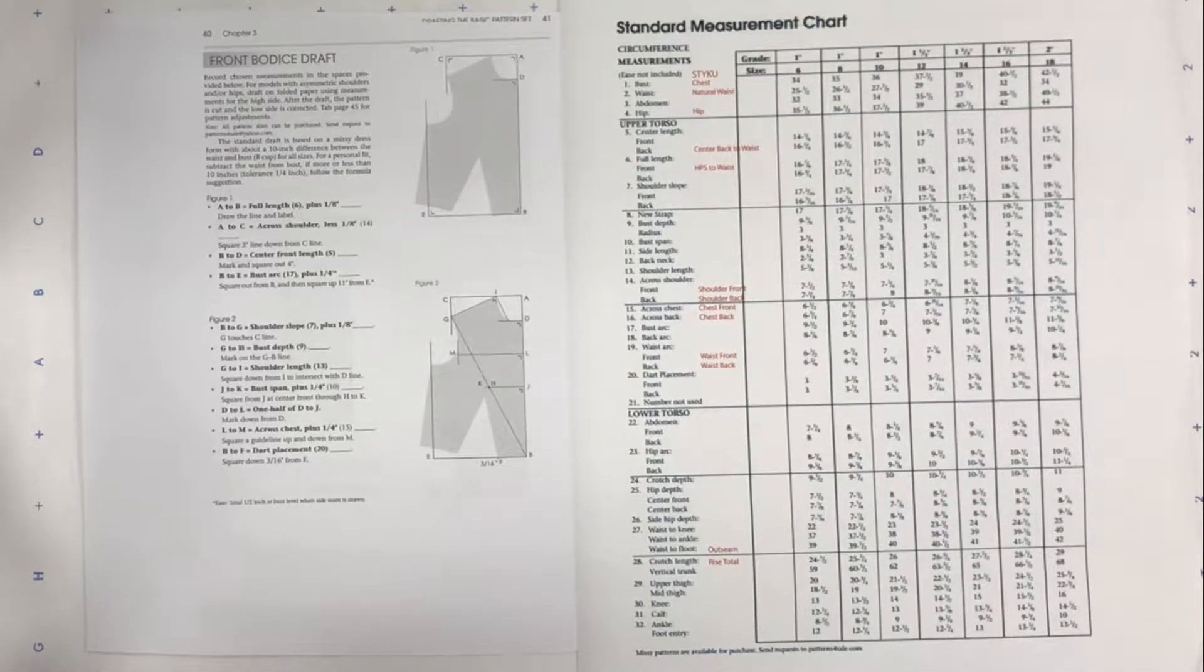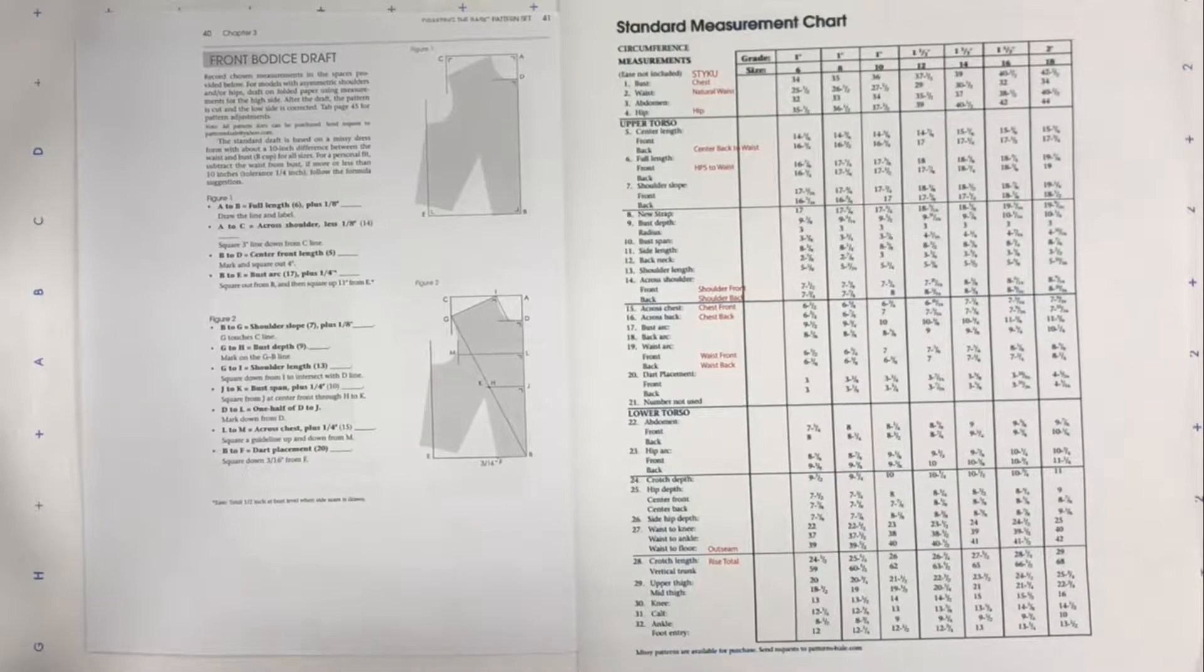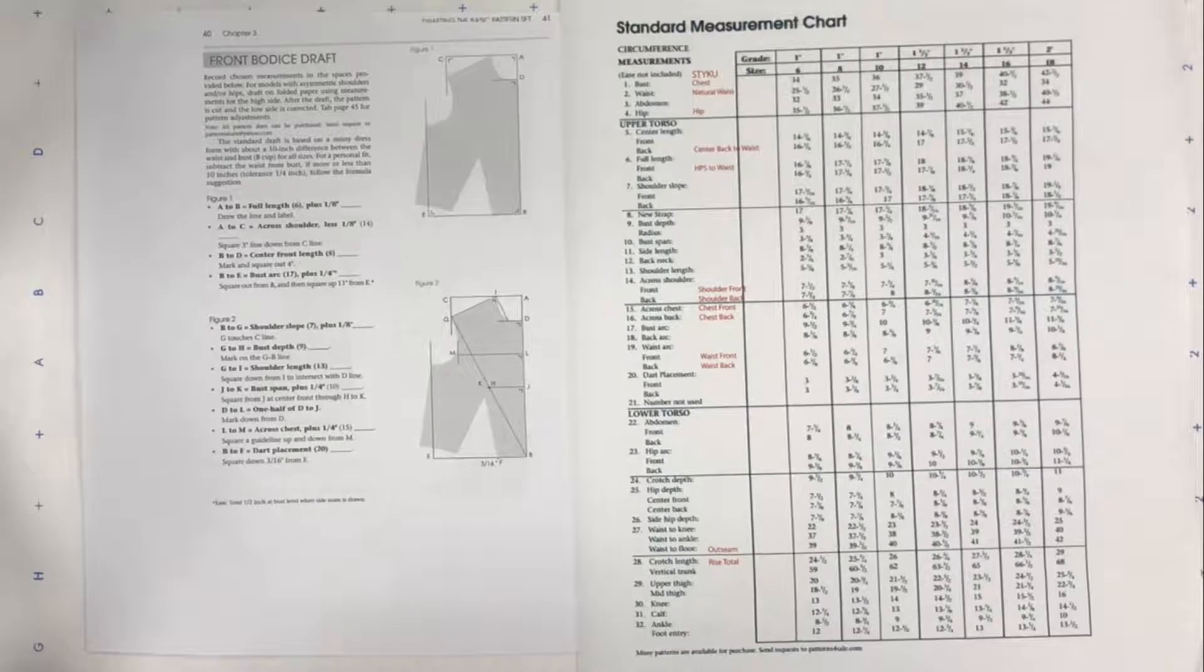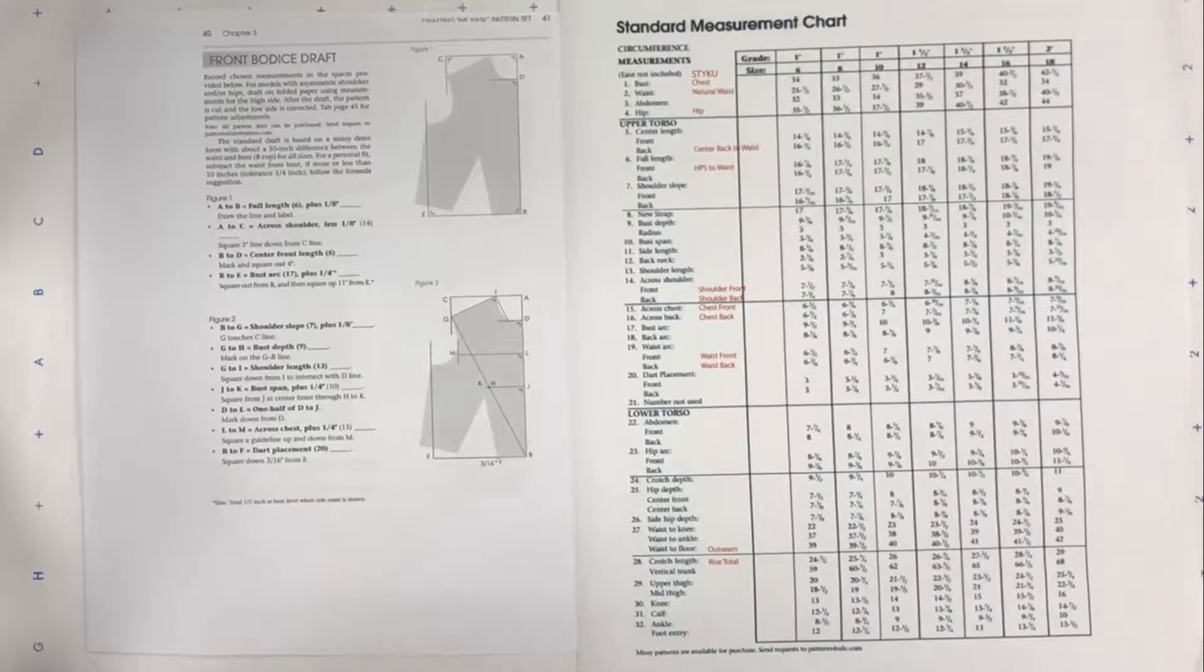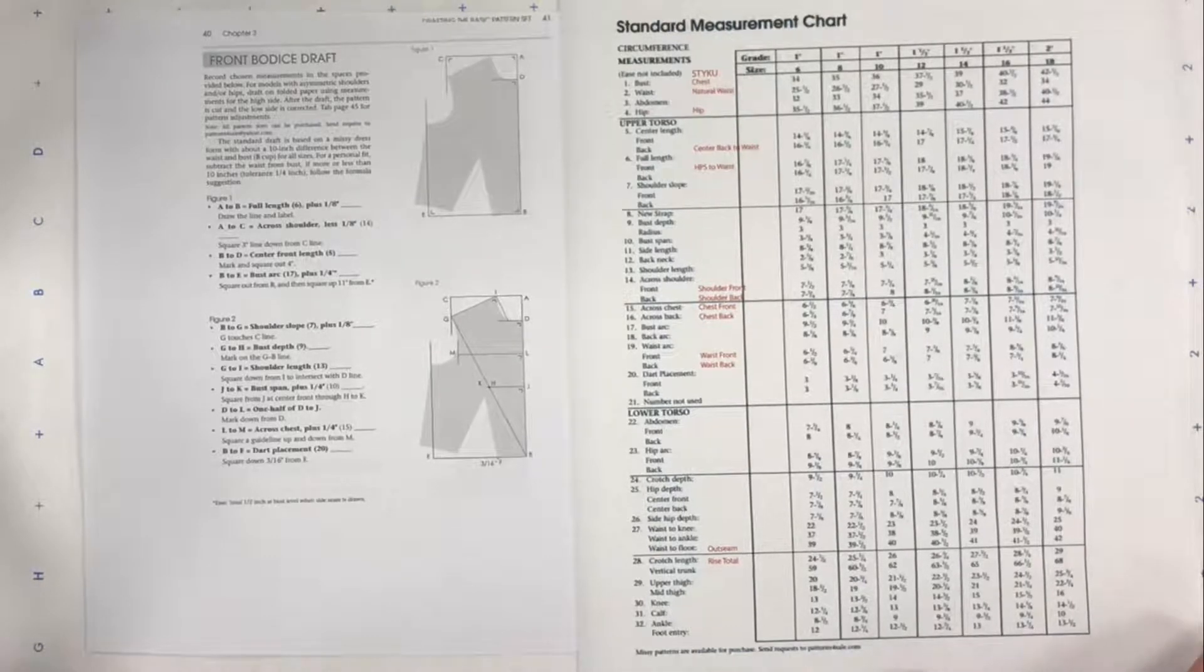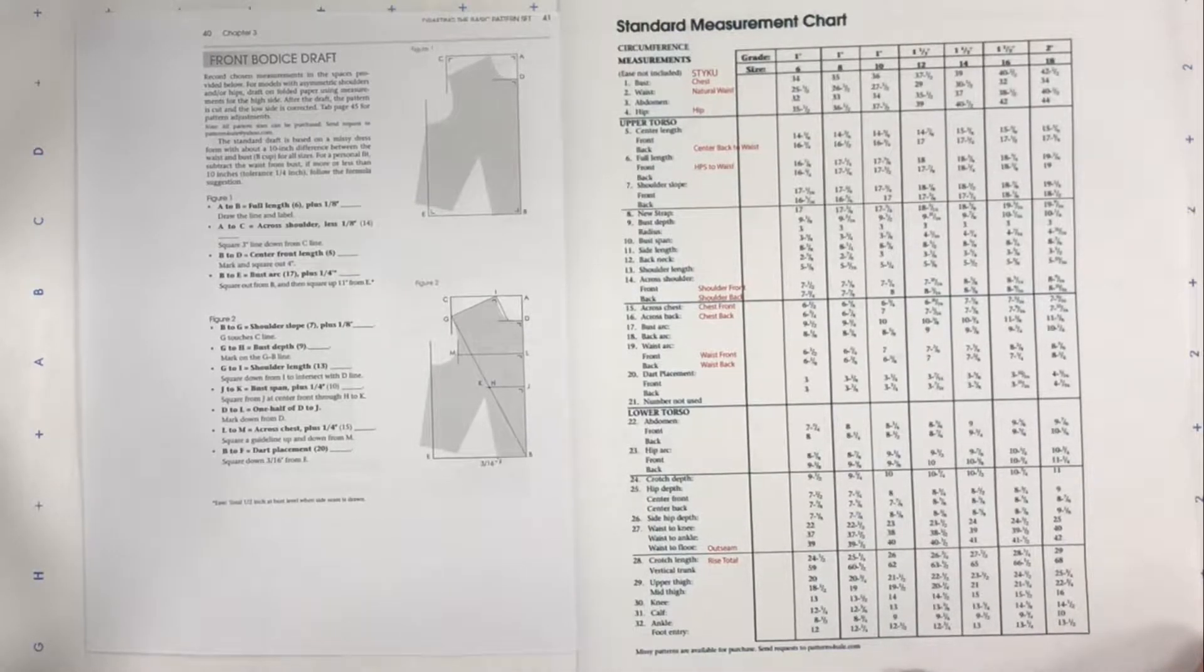This video shows you how to draft our front bodice sloper. This is in Chapter 3 of your books on page 40. Before you get started, you should be very clear about your measurements. Your book has a standard measurement chart at the end of Chapter 2 on the last page.